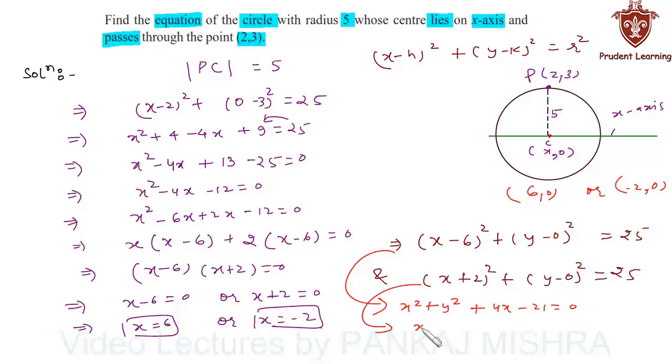And this will give you x² + y² - 12x + 11 = 0. So these are the two equations of the circle that satisfy the given conditions in the question. Hence, this completes our solution.